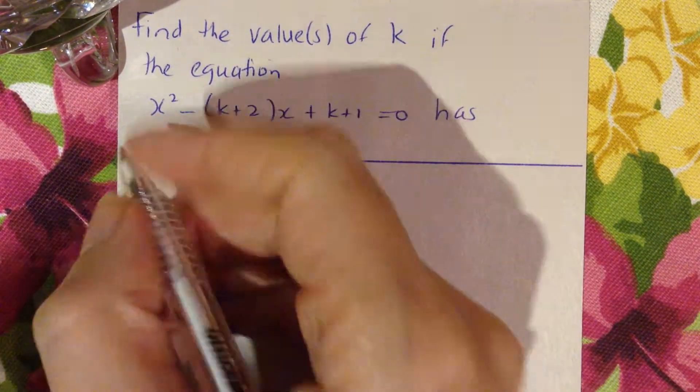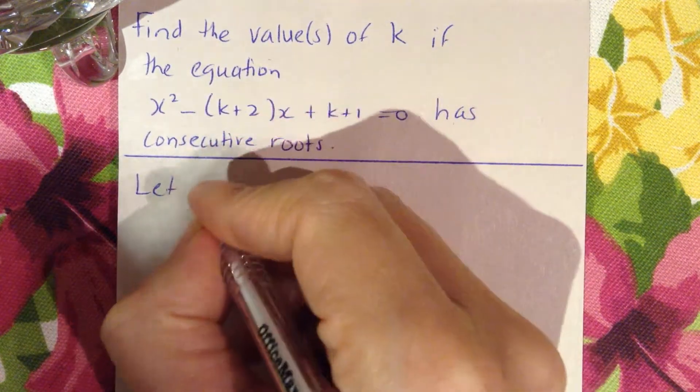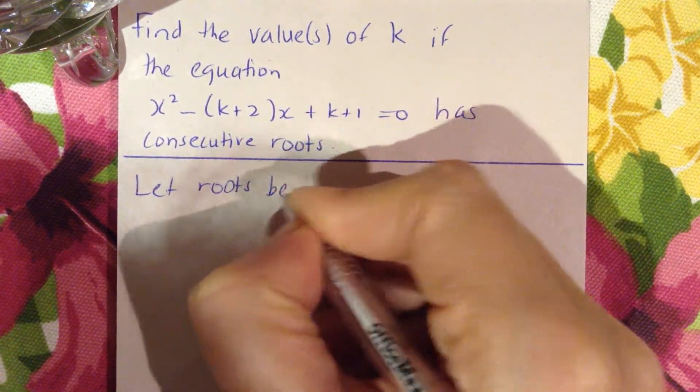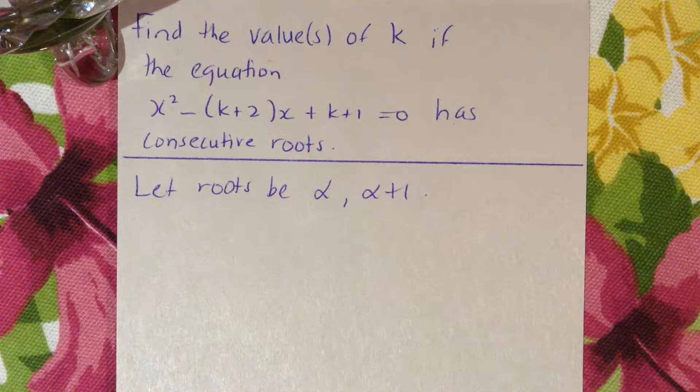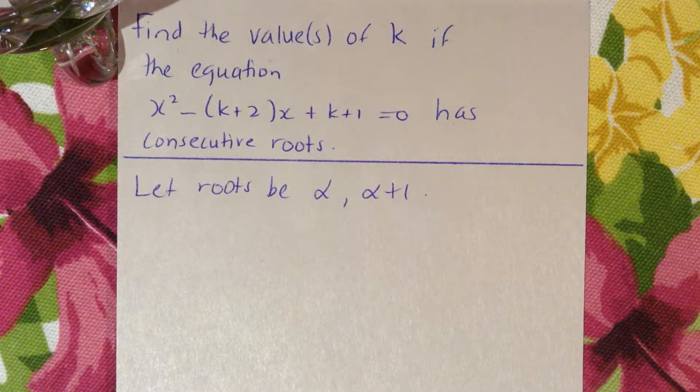We let the roots be α and α+1 because they have to be consecutive, follow each other.